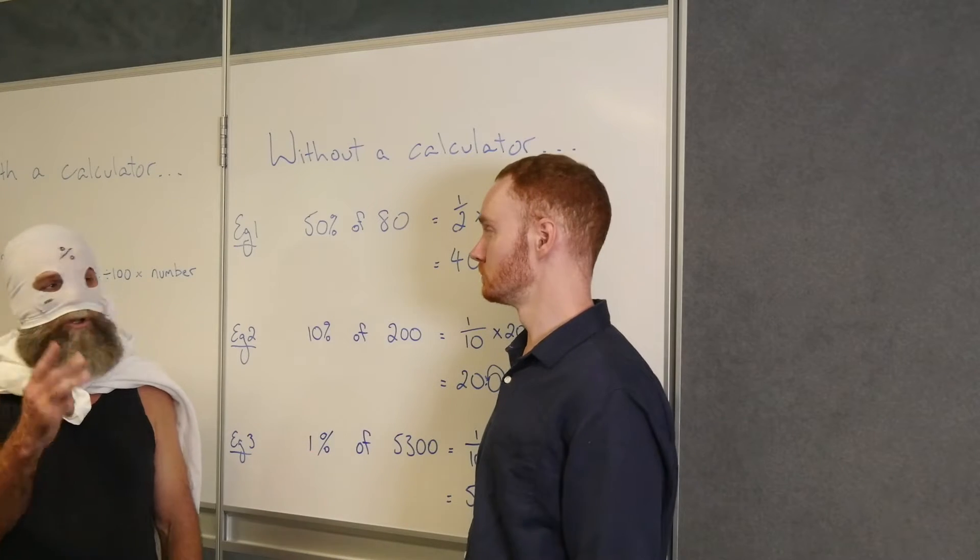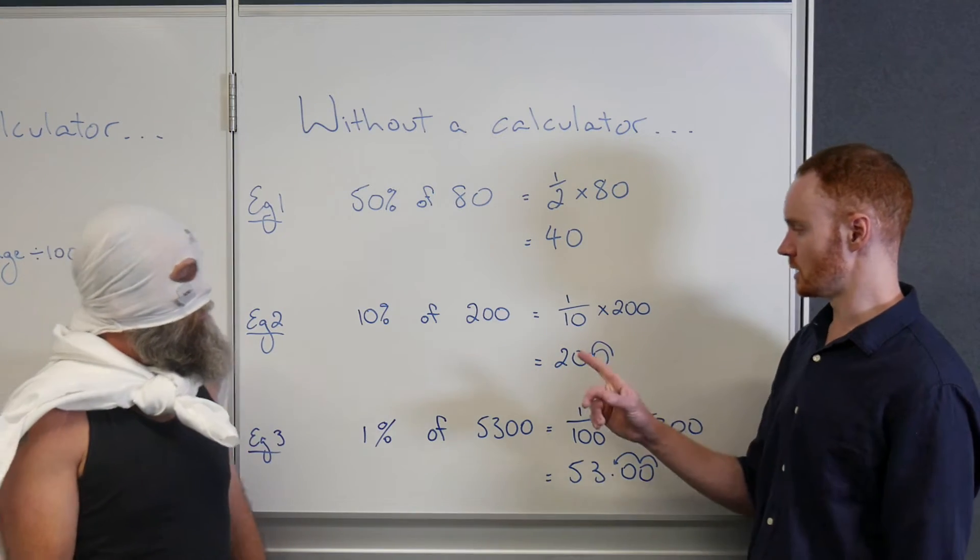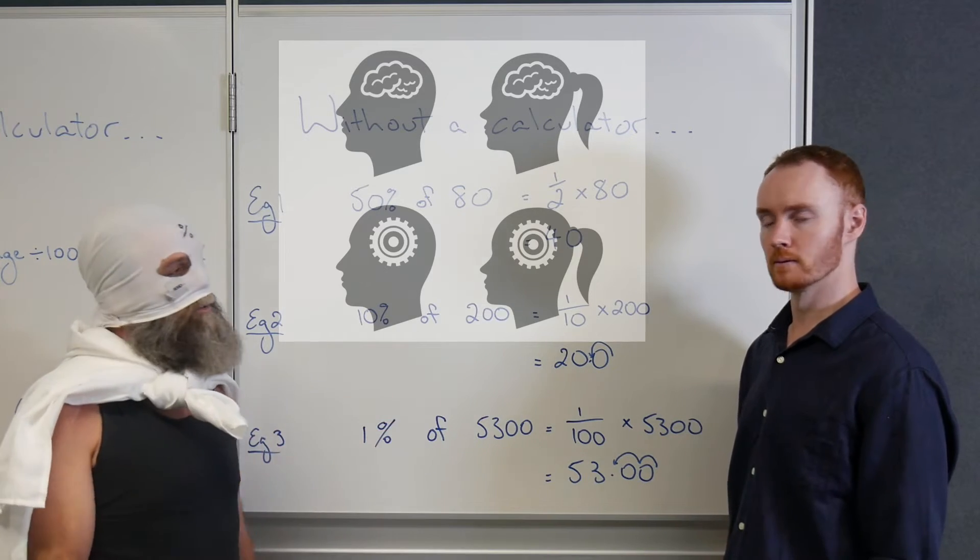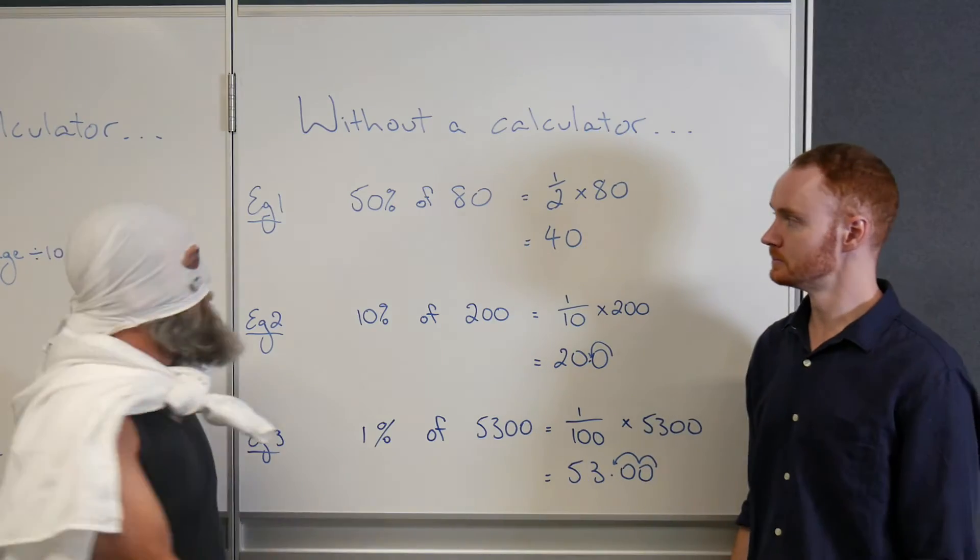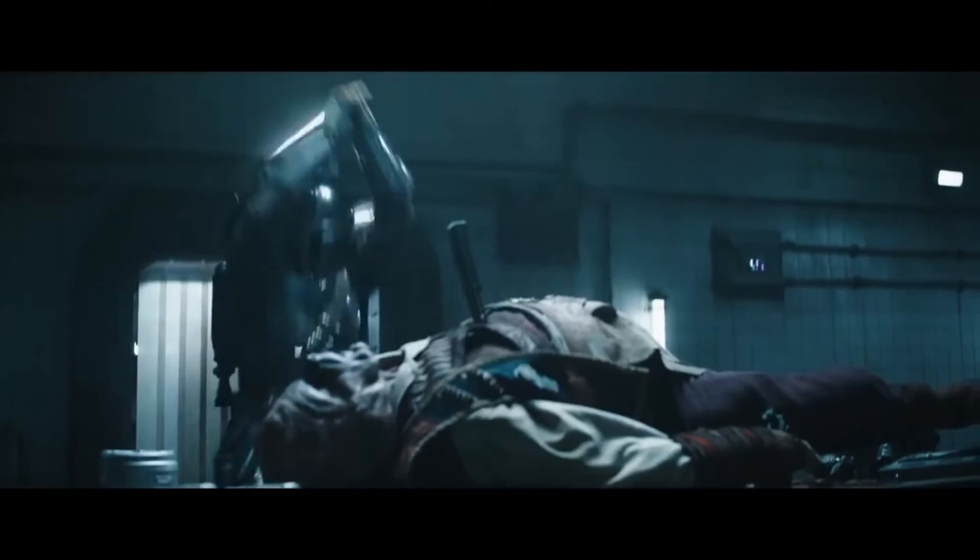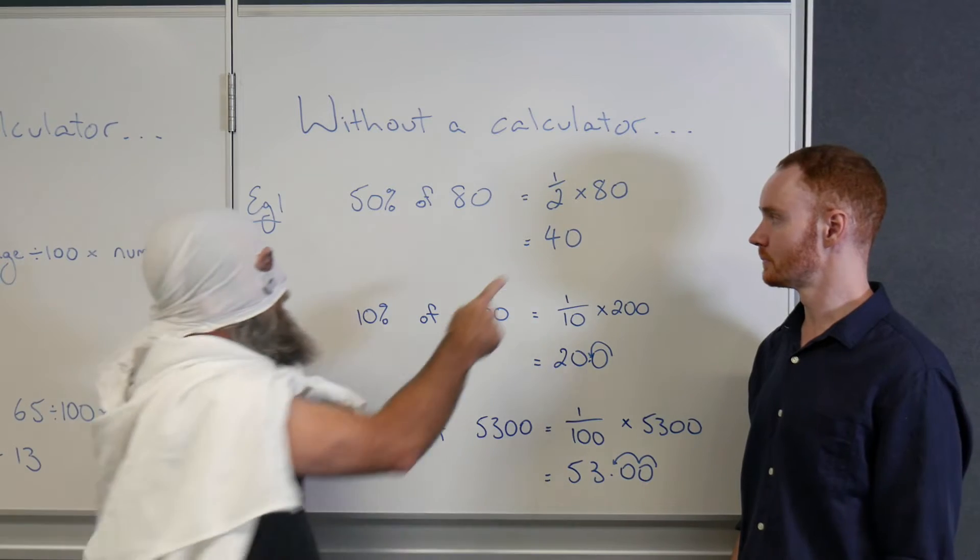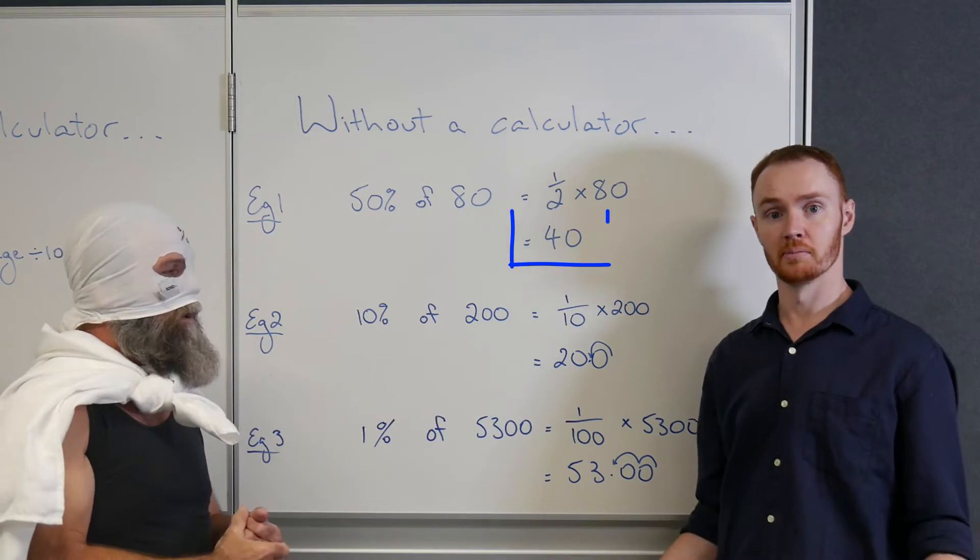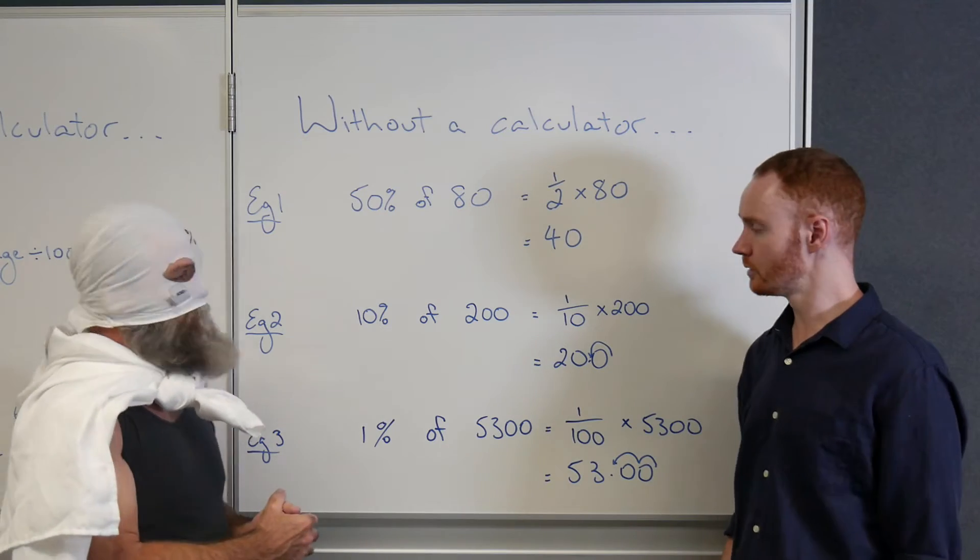There's only three that we really want you to be able to do in your head. Okay. These are the ones here. 50%, 10%, and 1%. You can do all those in your head, you can do just about any percentage. Right, so how do we do 50% of 80 in our head? I'm glad you asked. 50% is exactly the same as half. So to work out 50% of 80, all I'm really doing is working out half of 80. And half of 80 is, of course, 40.